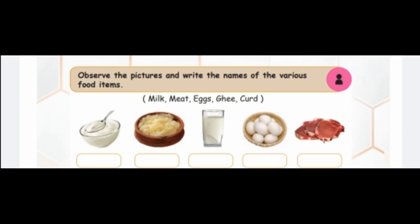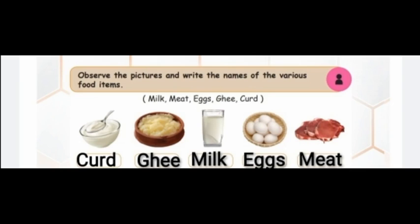Okay dear kids, let's do one activity. Observe the pictures and write the names of various food items. The options are milk, meat, egg, ghee, and curd. The correct answers are: first one is curd, second one is ghee, third one is milk, fourth one is eggs, and the last one is meat.